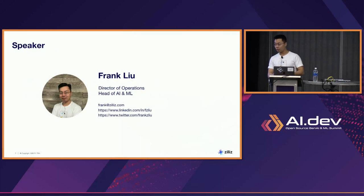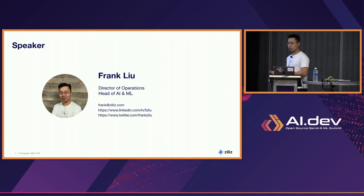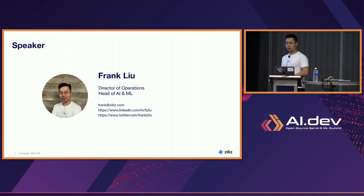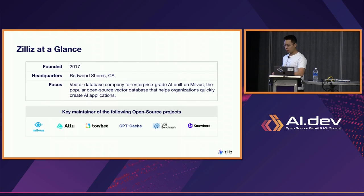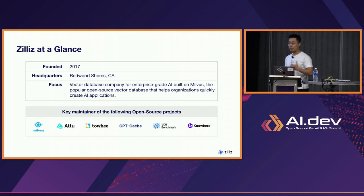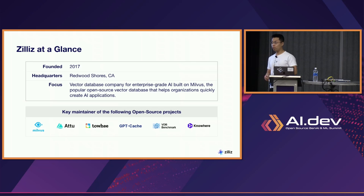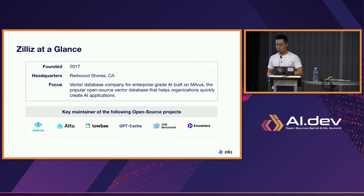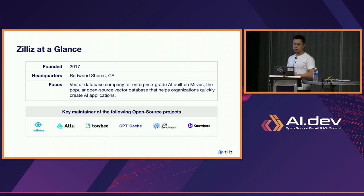Without further ado, I'll get started. My name is Frank, Director of Operations and Head of ANML here at Zilliz. Zilliz is the company behind Milvus. Milvus is the world's most widely adopted open source vector database — it's got something like 25,000 stars on GitHub. You can go download it and play around with it as you see fit. If you look at our company, we've been doing vector search and building out vector databases since 2018. Zilliz has been around since 2017, and we're based in Redwood Shores — about a 40 to 50 minute drive up 101. We're the key maintainer of a variety of open source projects, the most critical and well-known of which is Milvus.